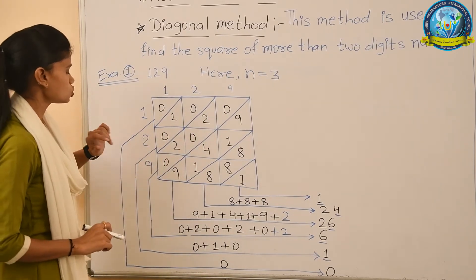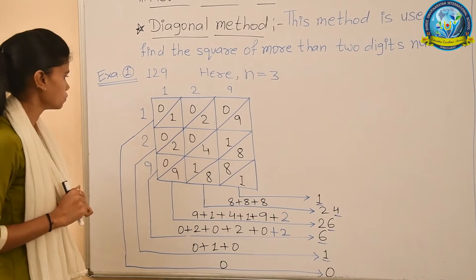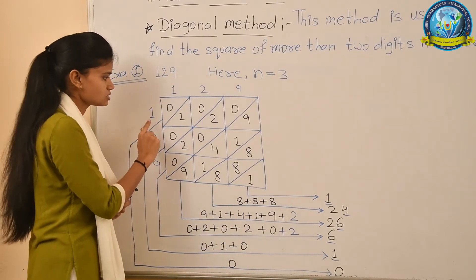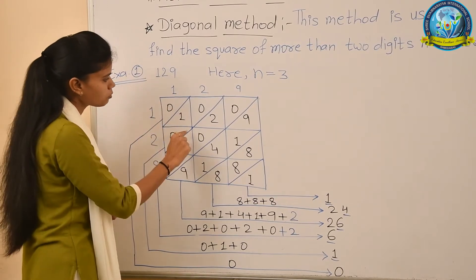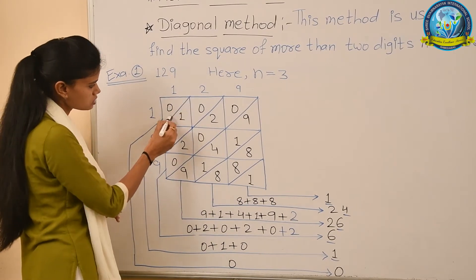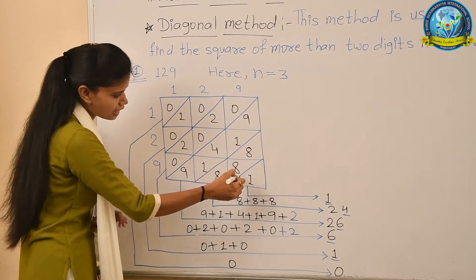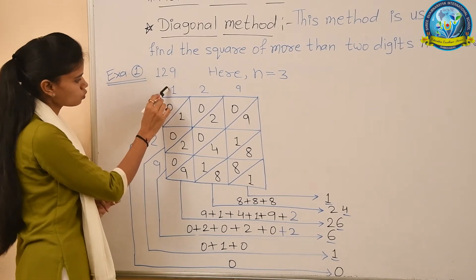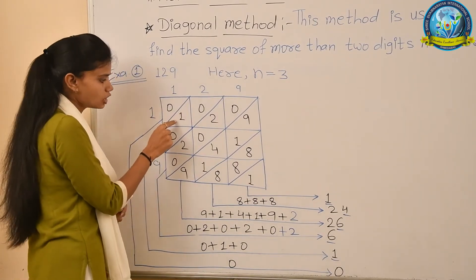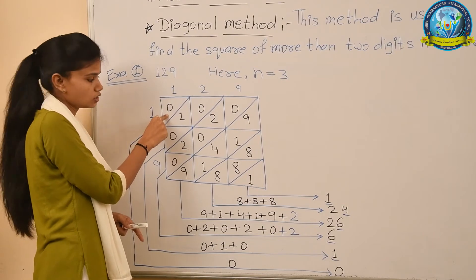Now we do multiplication. Each box in the table has a diagonal. When we multiply 1 with 1, we get 1 — a single digit. We write that digit in the lower part of the diagonal. The upper part gets 0. So for 1×1=1, we write 0 in the upper part and 1 in the lower part.